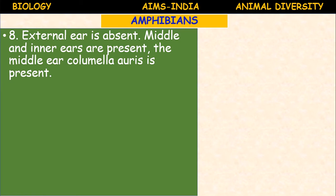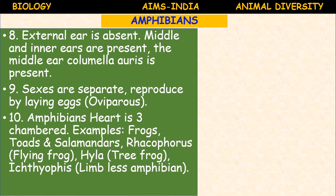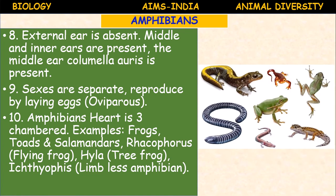The digestive system is well developed and a liver is also present. Tailed amphibians include salamanders and newts — these are Urodela. External ears are absent; the middle and inner ears are present. In the middle ear, the columella auris is present — a special feature of amphibians. Sexes are separate; they reproduce by laying eggs (oviparous). The amphibian heart is three-chambered. Examples: frogs, toads, salamanders, Rhacophorus (flying frog), Hyla (tree frog), Ichthyophis (limbless amphibian).